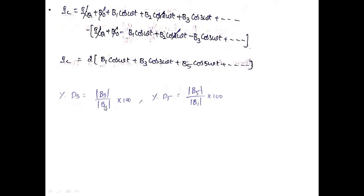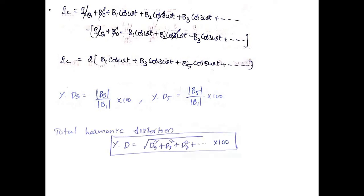The distortion due to the third harmonic is D3 = B3/B1, and distortion due to the fifth harmonic is D5 = B5/B1. The total harmonic distortion is D = √(D3² + D5² + D7² + D9² + D11² + ...). Only odd harmonics are present, and compared with Class A power amplifier, Class B has less harmonic distortion.